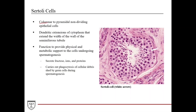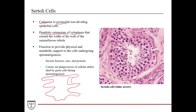Sertoli cells are columnar to pyramidal shaped, non-dividing epithelial cells. They have dendritic extensions of cytoplasm that extend the width of the wall of the seminiferous tubule, allowing them to interdigitate between the cells undergoing spermatogenesis. This supports their actual function, which is to provide both physical and metabolic support for these cells undergoing spermatogenesis. They do this by secreting fructose, ions, and proteins, and they also carry out phagocytosis of cellular debris shed by germ cells during spermatogenesis.